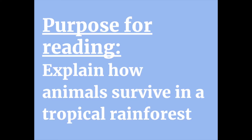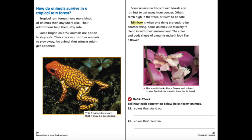Our purpose for reading today is to be able to explain how animals survive in a tropical rainforest. Tropical rainforests have more kinds of animals than anywhere else, and their adaptations help them stay safe. Some bright, colorful animals use poison to stay safe — their color warns other animals to stay away, and an animal that attacks might get poisoned. Some animals can run fast to escape danger, while others climb high in the trees or swim to be safe. Mimicry is when one thing pretends to be another; some animals use mimicry to blend in with their environment. The color and body shape of a mantis make it look like a flower.